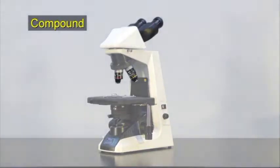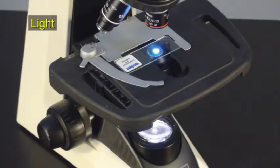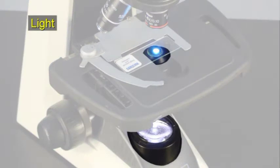Compound indicates that it uses two or more lenses to magnify the specimen. Light refers to the visible light it uses to illuminate the slide. This feature enhances your ability to observe the specimen.